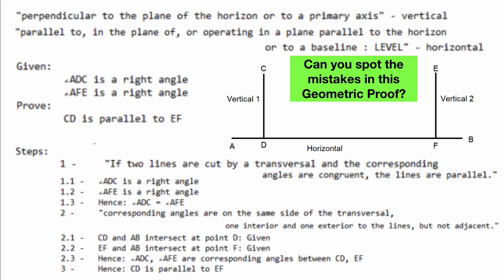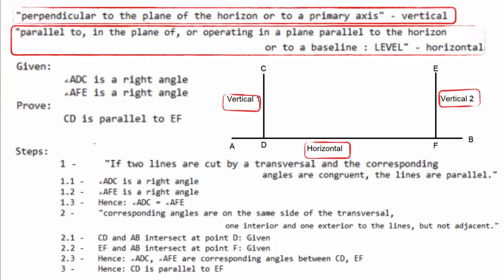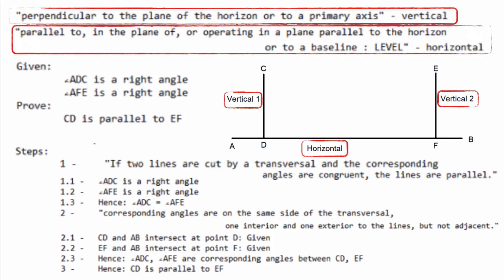So can you spot the mistakes? It turns out that the proof itself is perfectly valid. It's the embellishments that cause it to fail. Since horizontal and vertical are not defined in geometry, we can't cite them in our proof or label the diagram with those terms either.